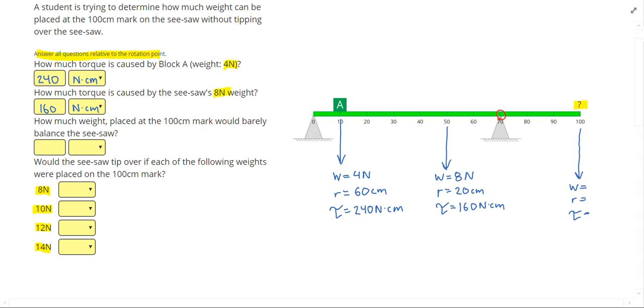My next question says, how much weight placed at the 100 centimeter mark would barely balance the seesaw? So instead of looking at this as four different problems, I'm going to think, what's the critical weight that I could put right here where it's just going to start to tip and all of that normal force would be transferred to this right fulcrum? If my seesaw is barely balanced, I know that I need the same amount of torque on both sides. On the left side I have 240 plus 160, that gives me 400 newton centimeters.